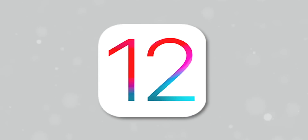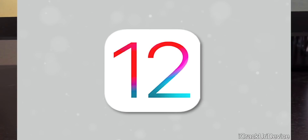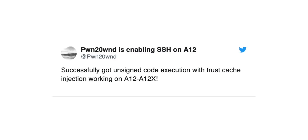pwn is working diligently on updating unc0ver, and we've kept you guys updated throughout the way. So earlier today pwn tweeted out: "Successfully got unsigned code execution with trust cache injection working on A12 through A12X," which is fantastic news. As many of you know, that is the core concept behind a jailbreak — unsigned code execution, code that Apple hasn't approved, functioning on an iOS device. It looks like there are just some more minor updates and polish required before the A12 through A12X jailbreak is released.